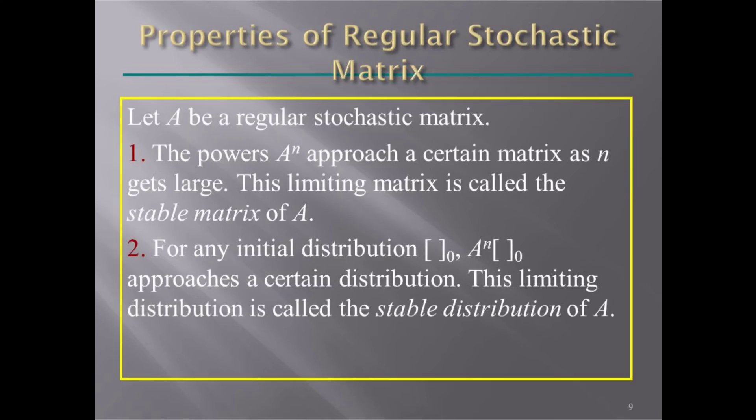Let A be a regular stochastic matrix. The power A raised to n approaches a certain matrix as n gets large. This limiting matrix is called the stable matrix of A. For any initial distribution,